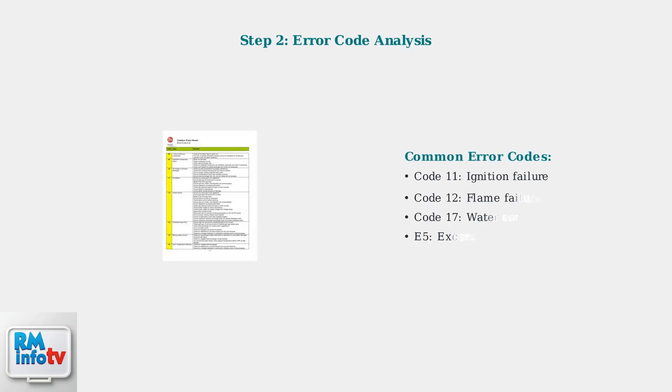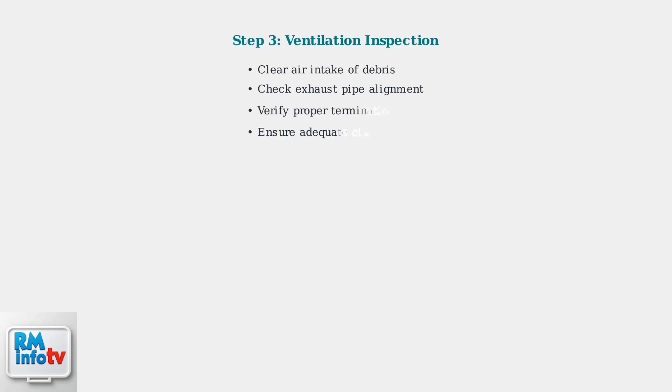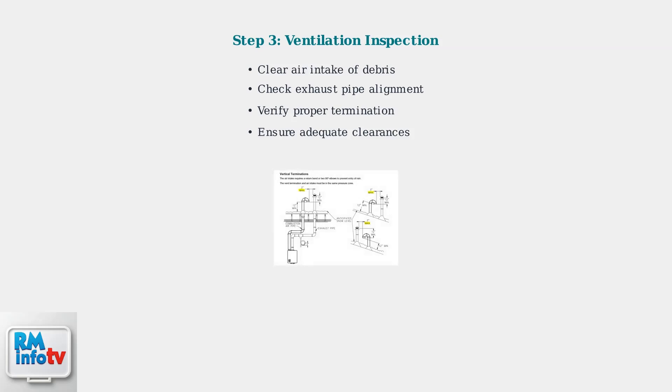Next, examine any error codes displayed on the unit. Richmond tankless heaters show specific error codes that help identify the exact problem — refer to the error code table to understand what each code means. Proper ventilation is critical for safe operation; inspect the air intake and exhaust pipes to ensure they're clear of obstructions and properly installed according to manufacturer specifications.